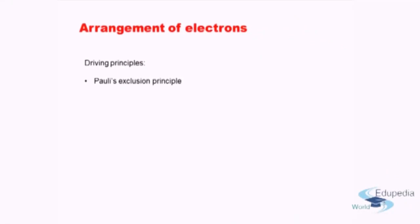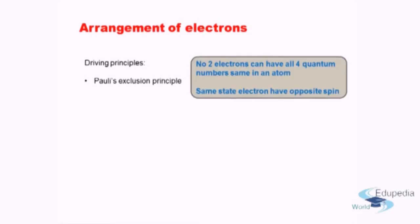With our background on quantum numbers, let's see how electrons are arranged in an atom. The first driving principle is Pauli's exclusion principle, which states that no two electrons in an atom can have all four quantum numbers the same. Two electrons in the same state must have opposite spin, as demonstrated in the earlier example.